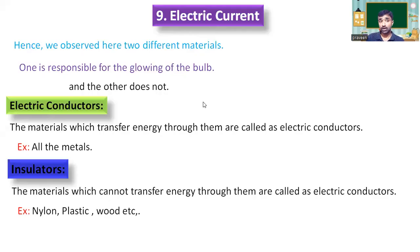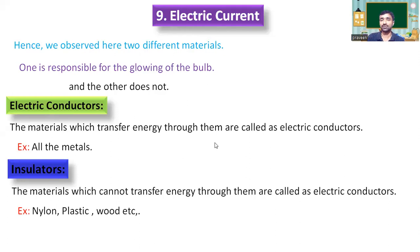Here we got an idea about the materials and their classification — electrical conductors and insulators. Now we are trying to understand what is the difference between these two materials. Why do metals conduct electricity, while other materials like nylon and plastic do not? That may be the reason here.